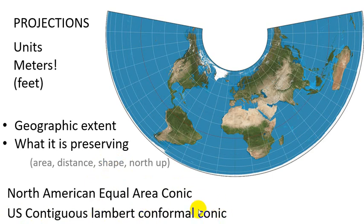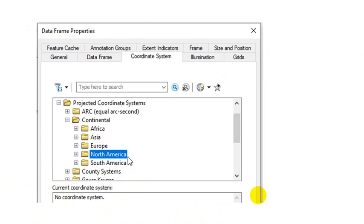If you ever are looking at a coordinate system and you're not sure what it does, if it doesn't specifically say, oh, here's the area, here's the metric that it's preserving, just Google it. It's the best way to figure some of these things out.